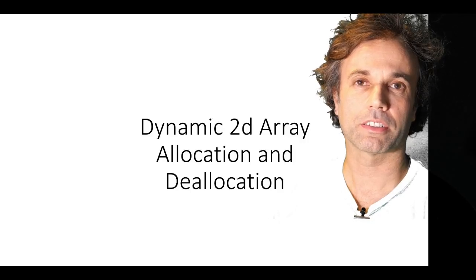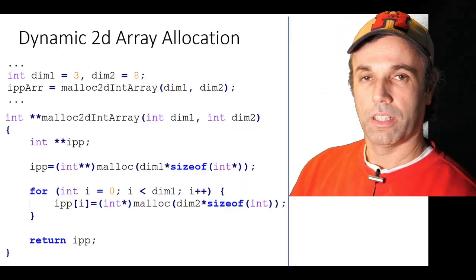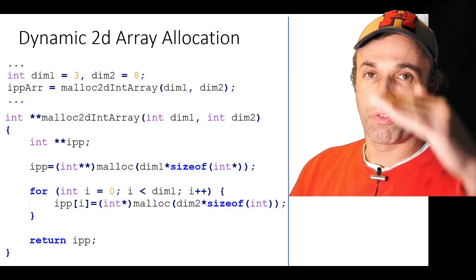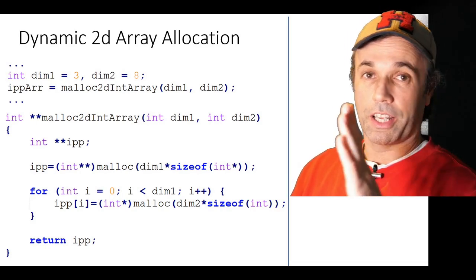Dynamic 2D array allocation and deallocation. In the following example we will allocate a 2D array which consists of three rows and eight columns.